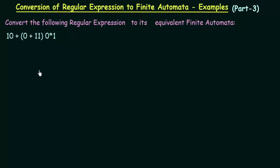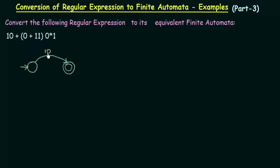Let us design it in a simple way. I will take a starting state and another final state — only two states for the beginning. Since this is one symbol and this is another symbol and they are separated by a plus, whenever symbols are separated by a plus you just send them to the next state using two different transitions. So this will go to the next state on input '10', and this will also go to the next state on input '0 + 11 0* 1'. Since we are treating it as a single symbol, we write it like this.